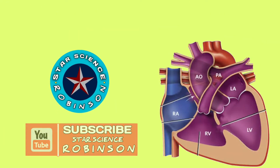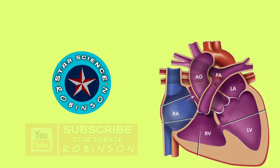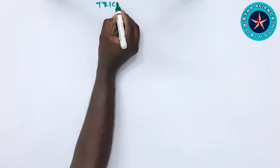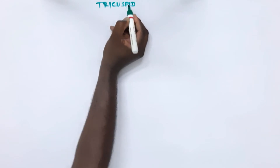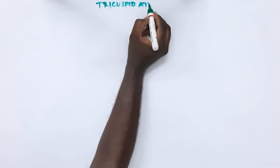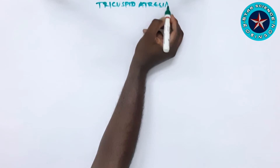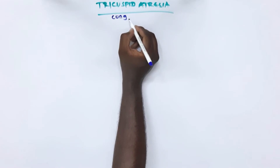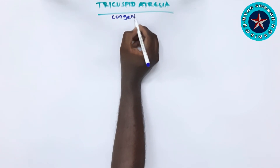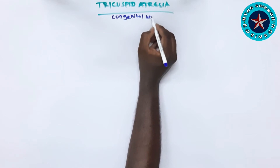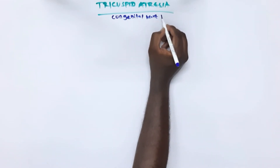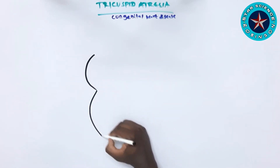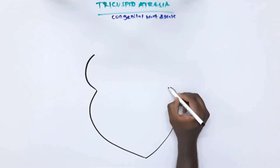Hi friends, welcome to our YouTube channel Star Science Robinson. Let's get into the topic. We'll see about tricuspid atresia. First of all, what is tricuspid atresia? Tricuspid atresia is a congenital absence of the tricuspid valve, resulting in no communication between the right atrium and right ventricles. There will be no tricuspid valve present in the right chambers.